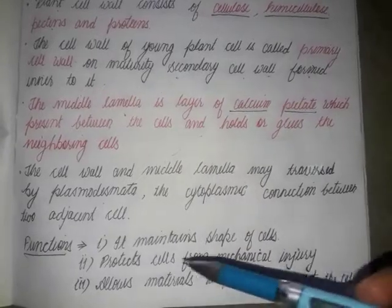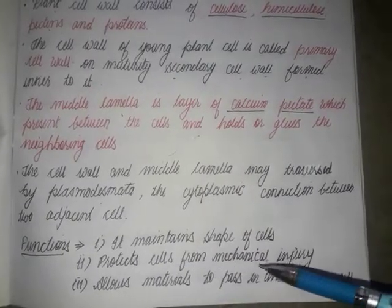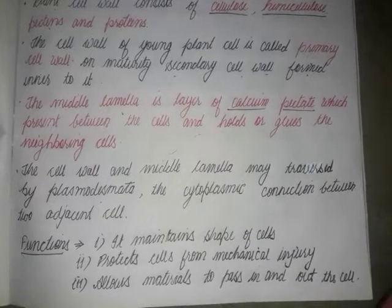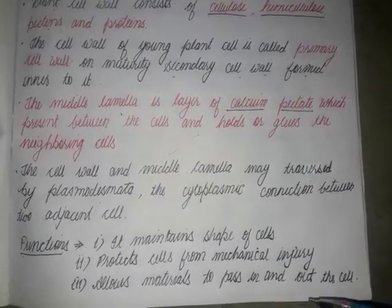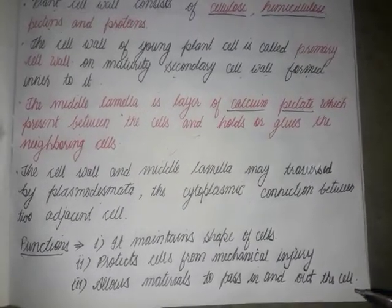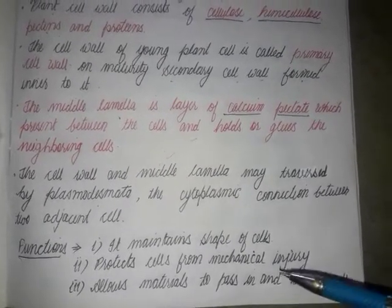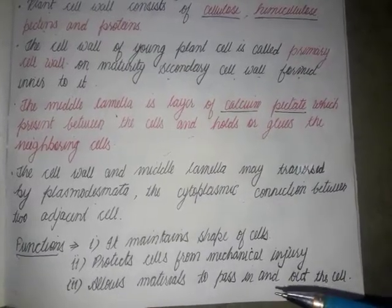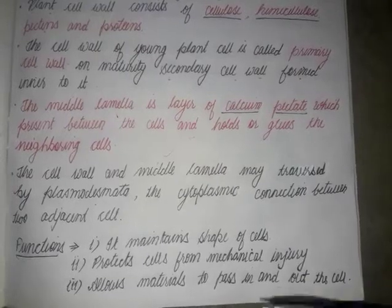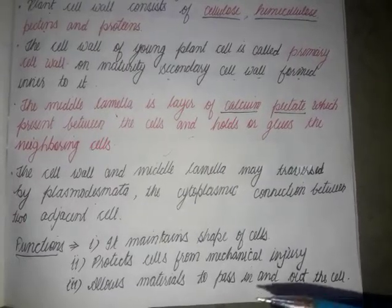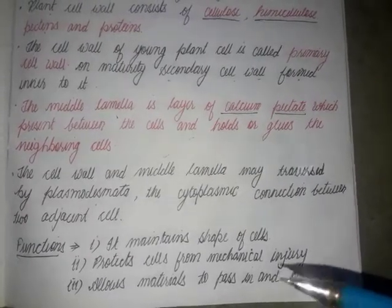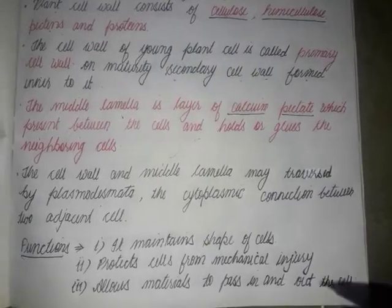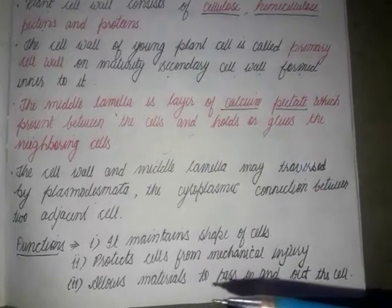To summarize the main functions of the cell wall: first, it maintains the shape of the cell; second, it protects cells from mechanical injury; third, it allows materials to pass in and out of the cell; fourth, it wards off the attack of pathogens; and fifth, it prevents undue expansion of the cell when water enters by osmosis. So this topic is complete for today.